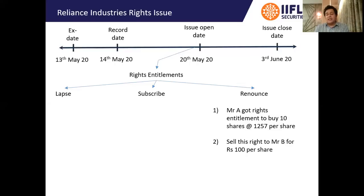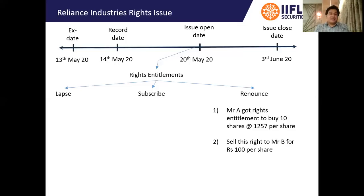Now covering the tax implications: from Mr. B's point of view, his total cost of acquisition is Rs.1,357 per share (Rs.100 paid to A plus Rs.1,257 paid to the company). He will pay capital gains tax when he eventually sells — short-term capital gains at 15% if sold within one year, or long-term capital gains at 10% if sold after one year. From Mr. A's point of view, the Rs.100 per share received is treated as short-term capital gains, since rights are considered a capital asset and renouncing them is treated as a transfer of a capital asset.